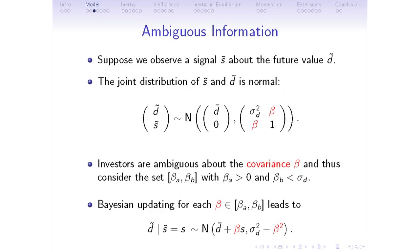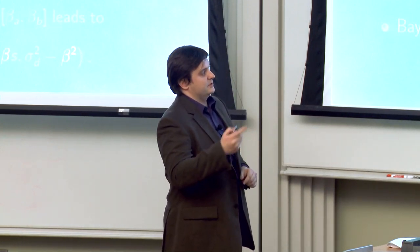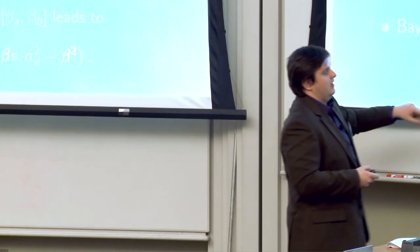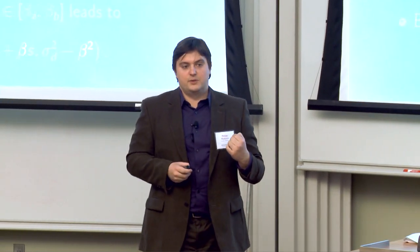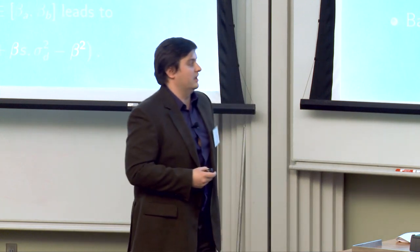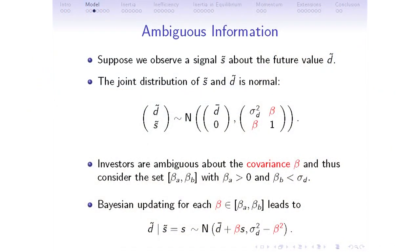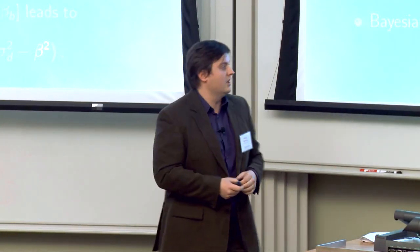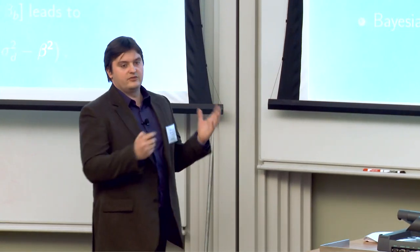We focus on the case where beta-A is greater than zero, meaning there's no ambiguity about the fact that there is a positive correlation between the signal and the dividend. Bayesian updating for each beta in this interval leads to a set of posterior distributions — the conditional distribution of the dividend given the signal. The posterior mean is just D-bar plus beta times the signal, and the residual variance is sigma-D squared minus beta squared.